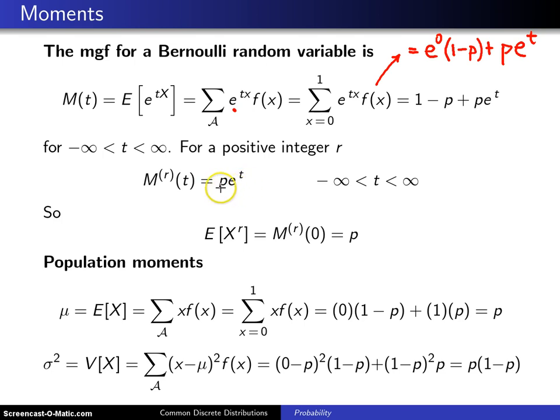But when you take a first derivative you get pe^t, and when you differentiate again you get pe^t and so on. So the rth derivative of the moment generating function is always pe^t, which means when you plug in 0 you will simply get e^0, which is 1 times p, and that is p.